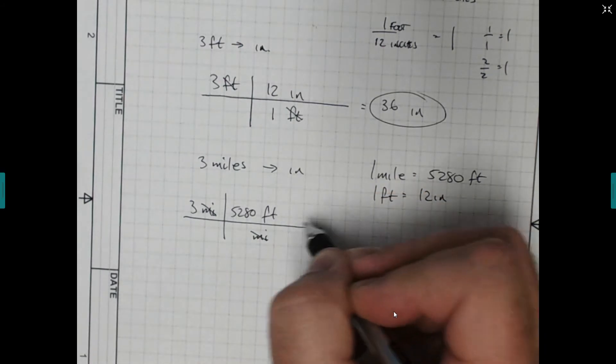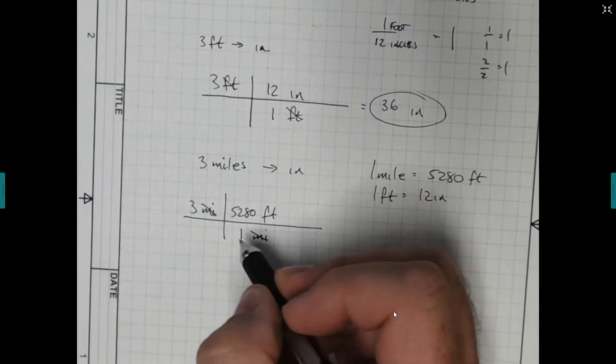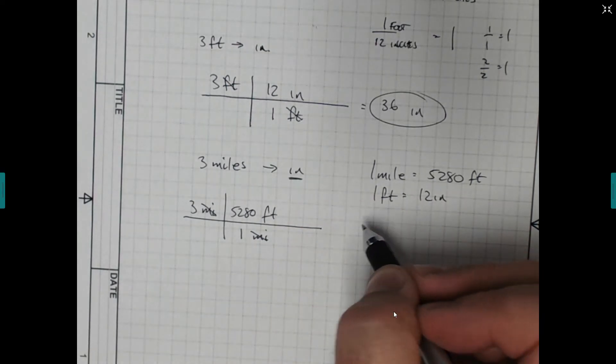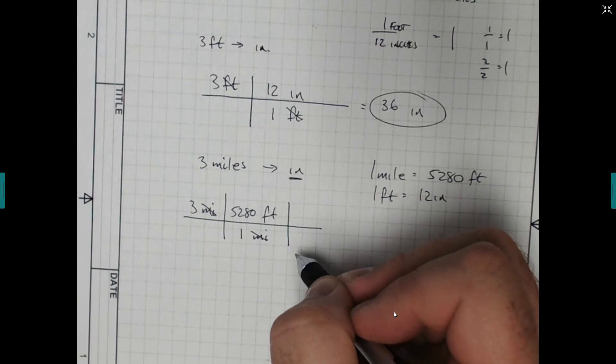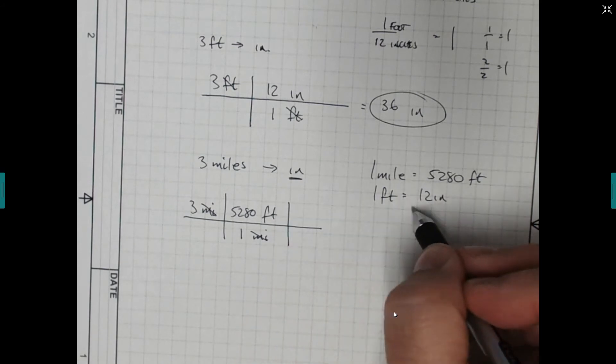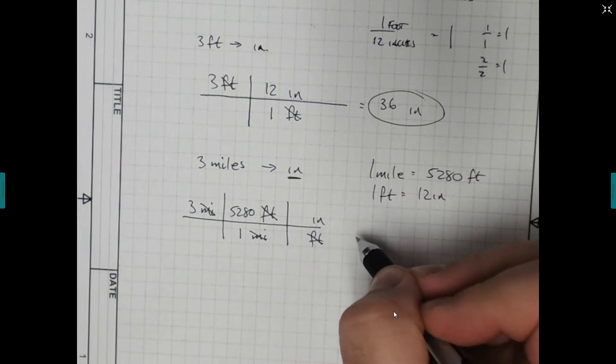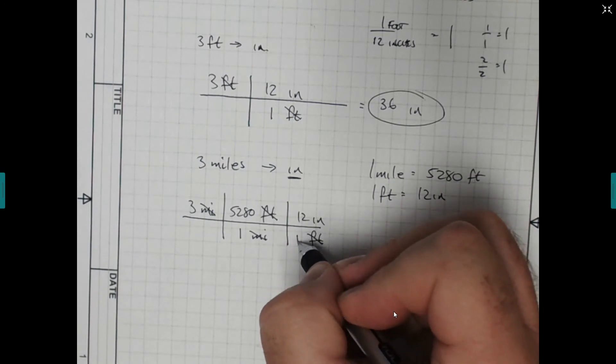We're going to put the feet in the top so the miles go away. Then we just write in our numbers. 5,280. And then over here we have 1 mile. But now we're not done because we ended up with feet. We didn't want feet. We wanted inches. So we're going to put another one. So now we're trying to get rid of feet. So we're going to take our next equality and put feet in the bottom so they go away, that means inches goes in the top.